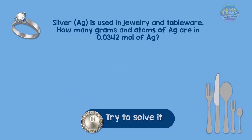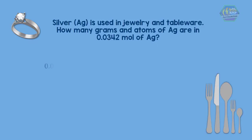We have 0.0342 mole of silver multiplied by its molar mass, 107.9 grams per mole, to get the mass of silver.